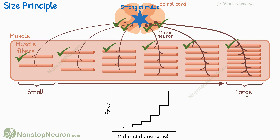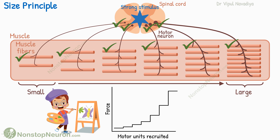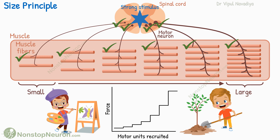The size principle allows fine adjustment in force generation at weak contractions. For example, if you are making some art piece, you need very fine control over how much force you exert. This fine control is possible because at this range, only small motor units are recruited, so you can make very tiny adjustments in force. On the other hand, if you are doing some heavy work and want more force, the recruitment of larger and larger motor units increases force more rapidly.